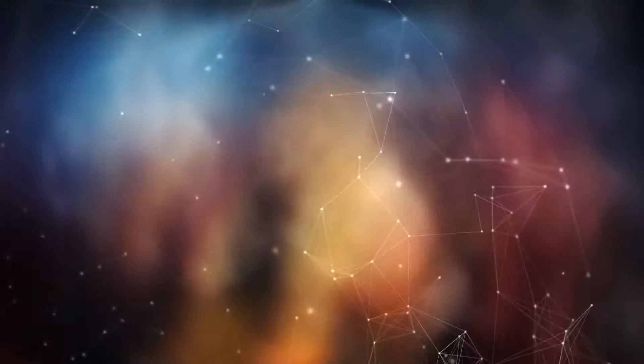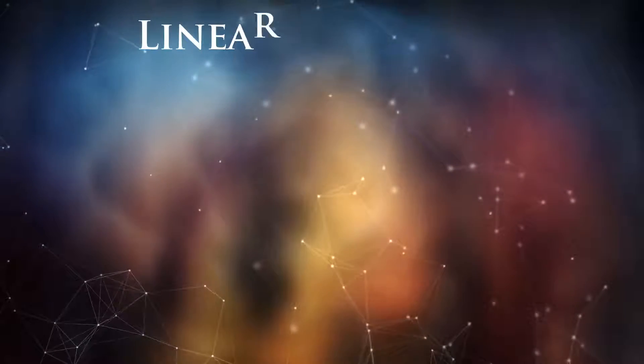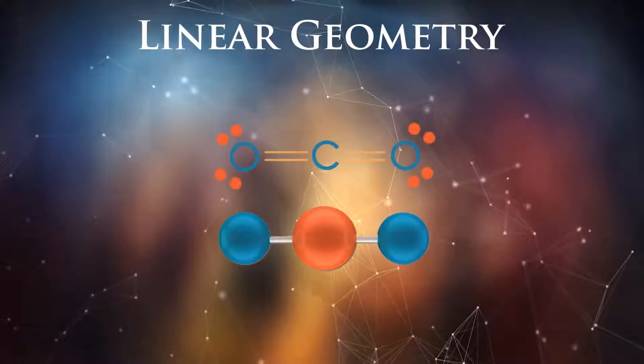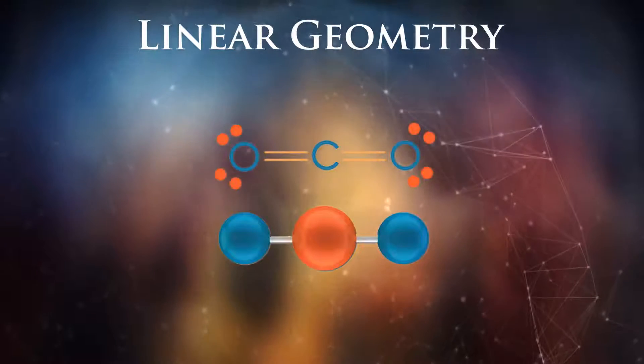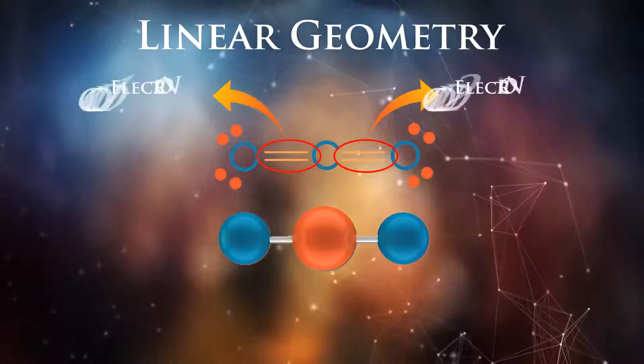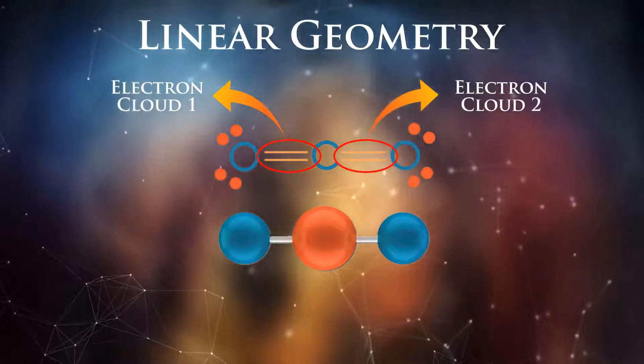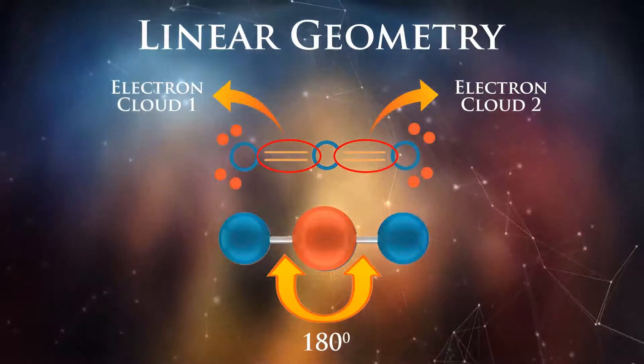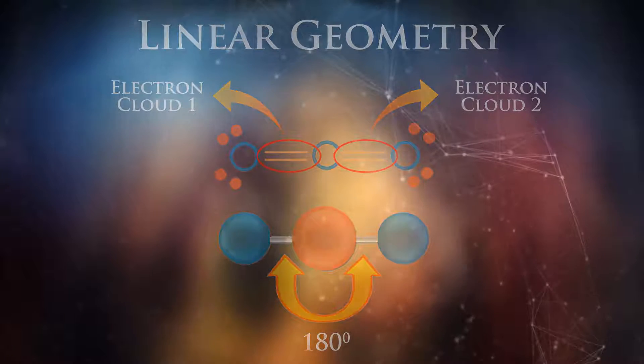For linear geometry, we will use carbon dioxide molecule as an example. As you can see, carbon here is the central atom and it has two electron clouds around it. When these two electron clouds want to get as far away from each other as possible, they will create a linear molecule with an angle of 180 degrees.